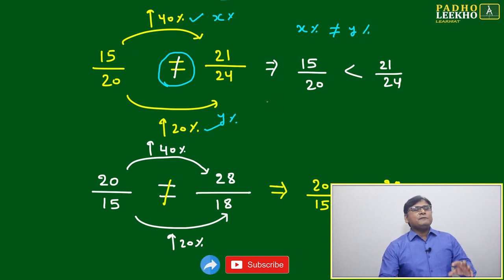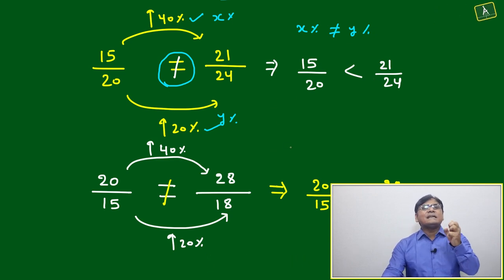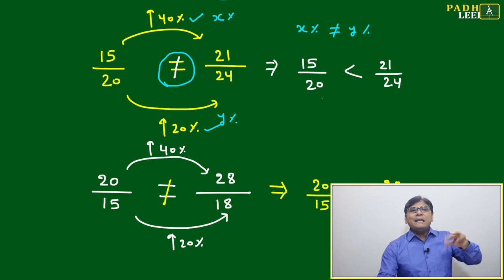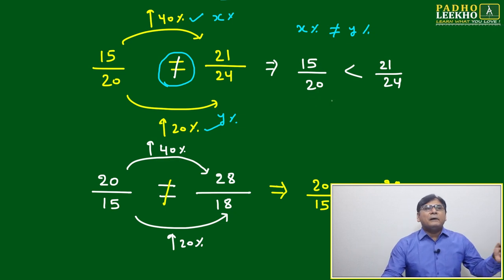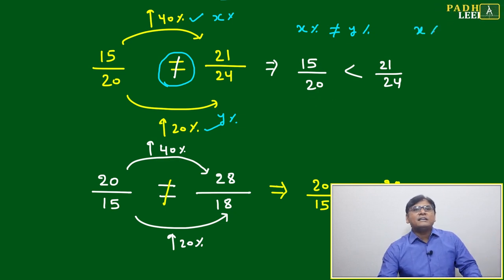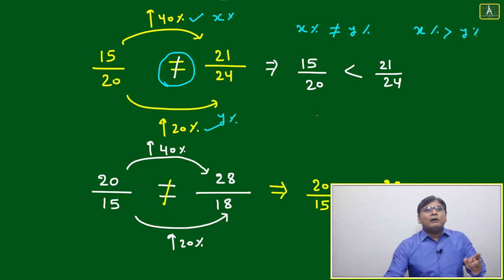Just suppose if both numerator and denominator have changed by same percentage, then ratio would be equal. But numerator is changing more than denominator, means x percentage more than y percent, what will happen?